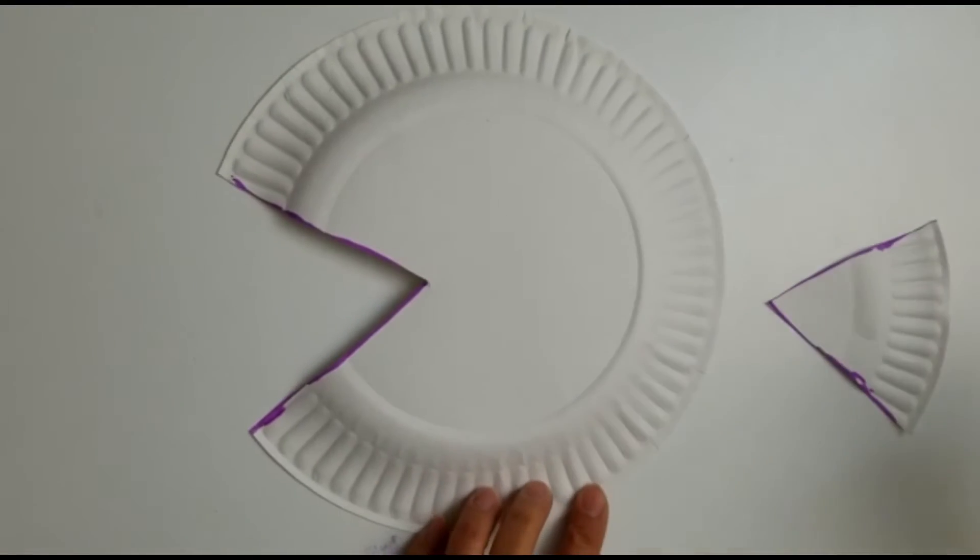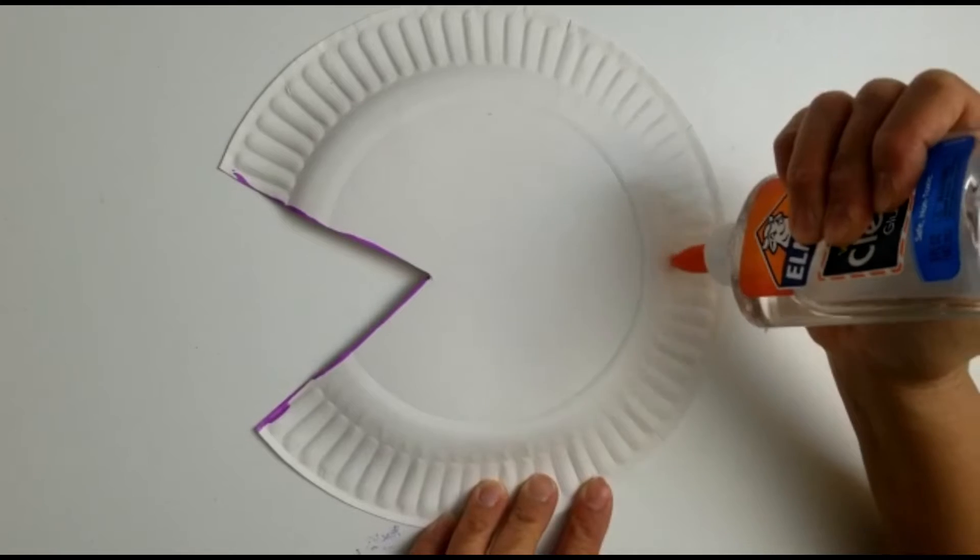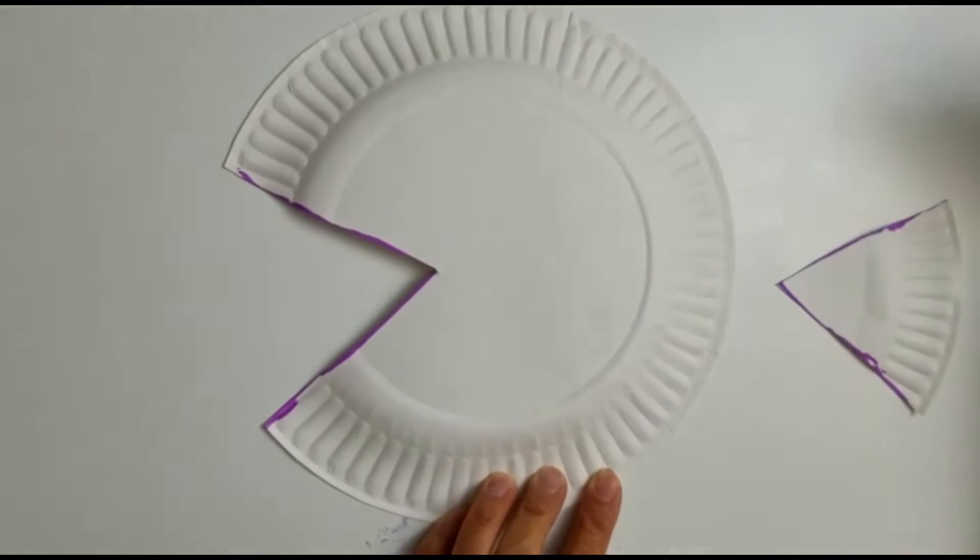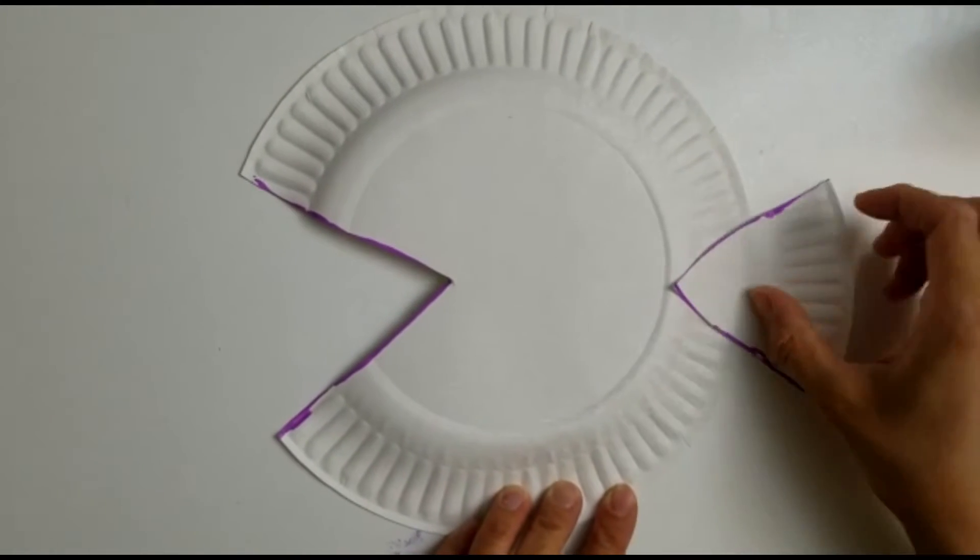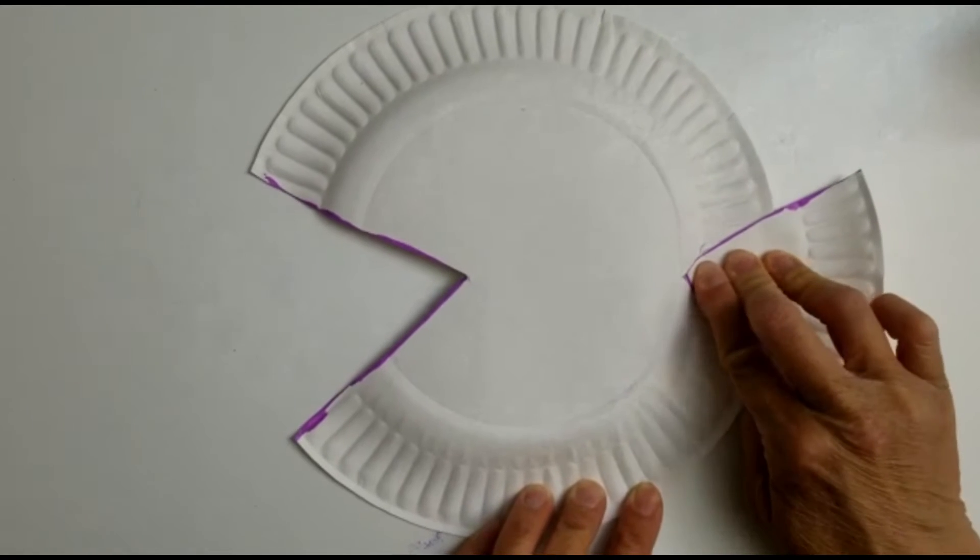After we cut that out, we're going to glue the tail on the back. Make sure you press it down really good so it's thick.